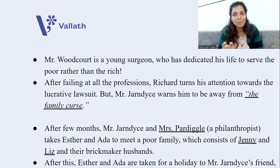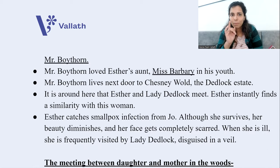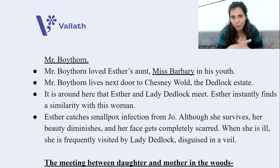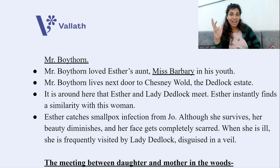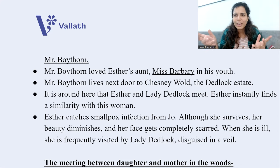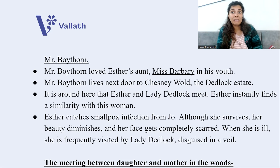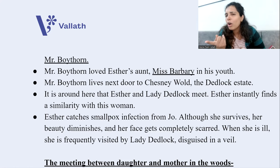In a minor plot, Mr. Jarndyce and Mrs. Pardiggle take Esther and Ada to meet a poor family — Jenny, Liz, and their brickmaker husbands. Afterwards, Esther and Ada are taken on a holiday to Mr. Jarndyce's friend Mr. Boythorn, who once loved Esther's aunt Miss Barbary but they never married. Boythorn lives next door to Chesney Wold, and it is here that Esther Summerson and Lady Dedlock meet. Esther instantly notices how similar they look to each other.